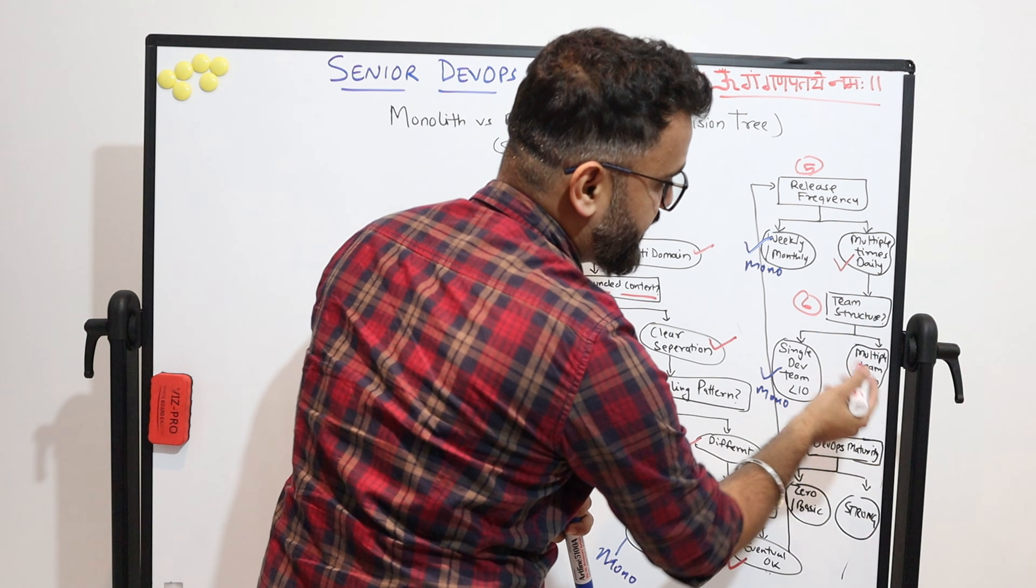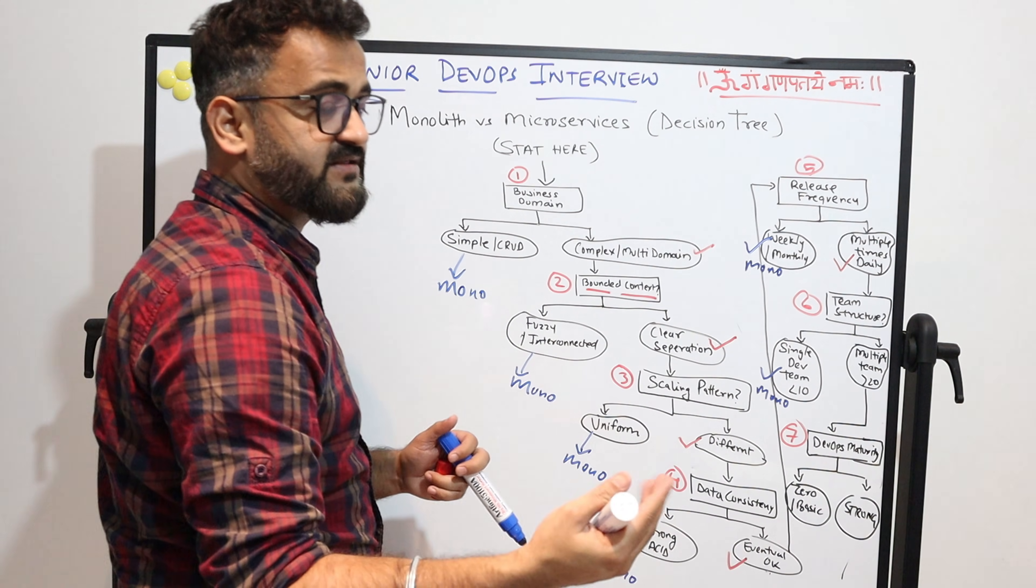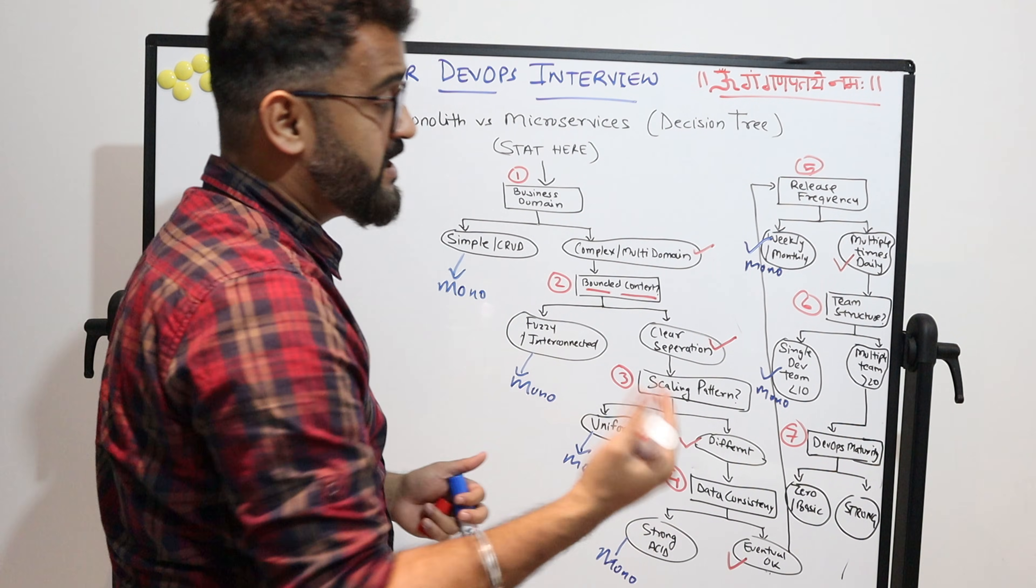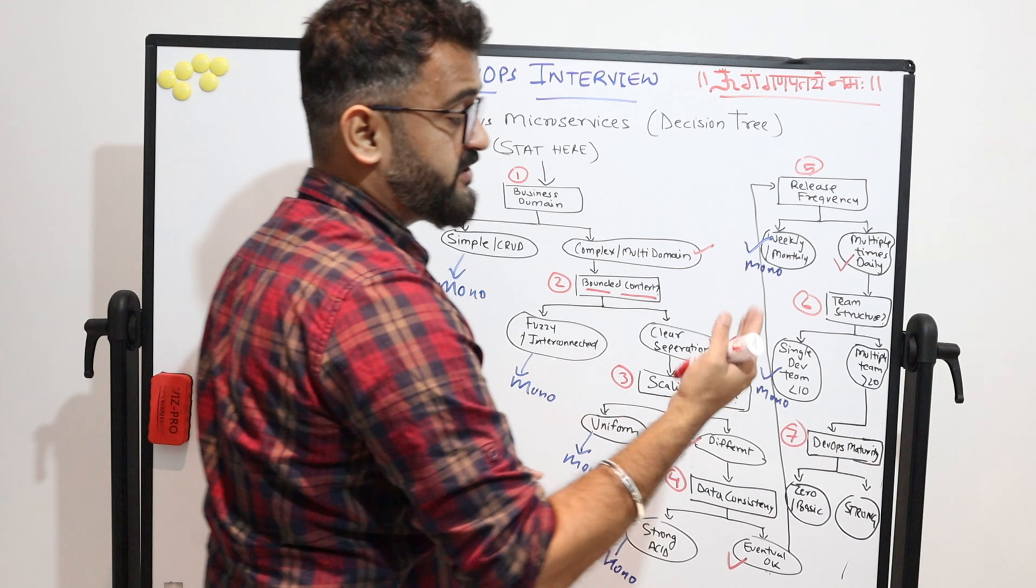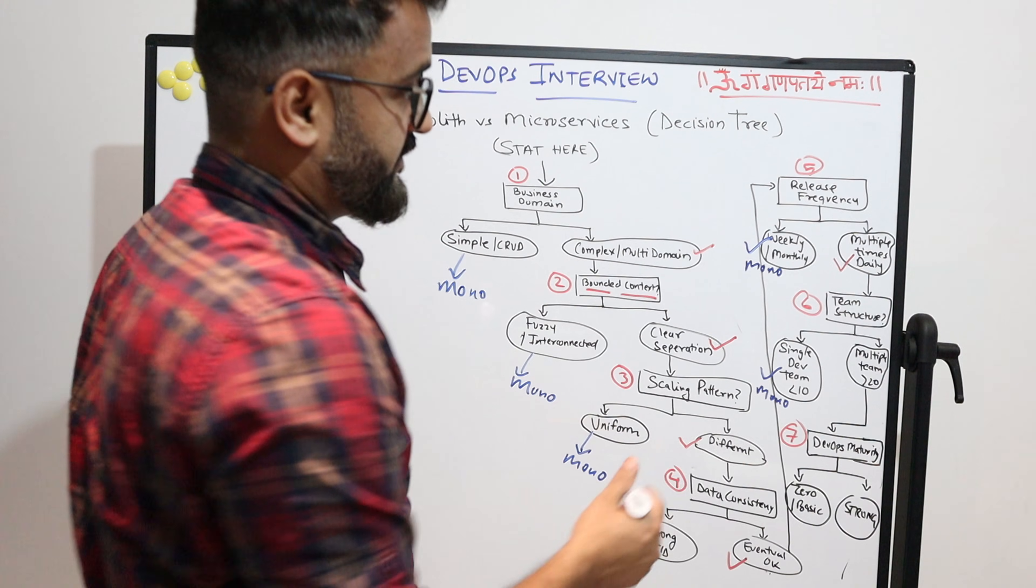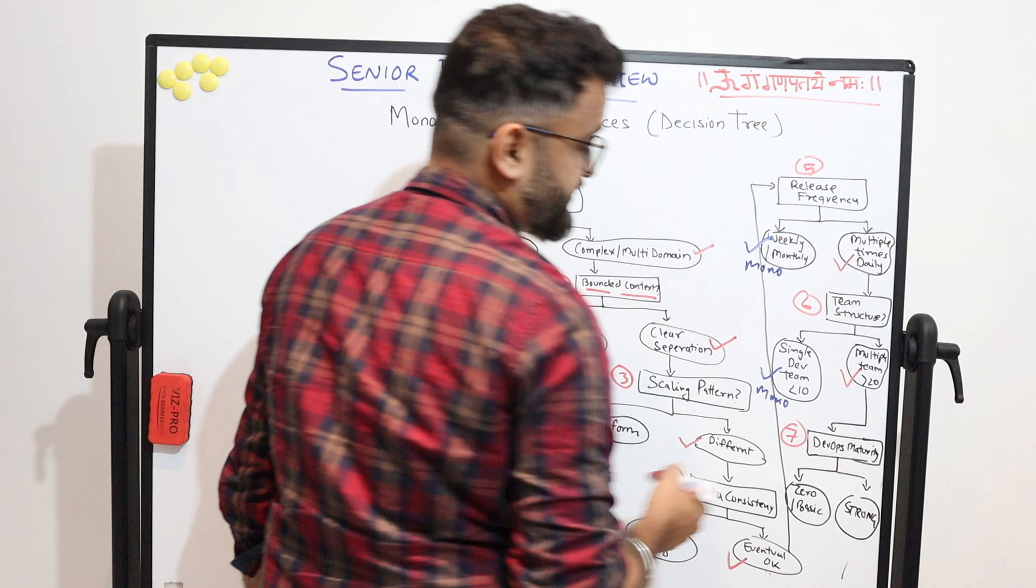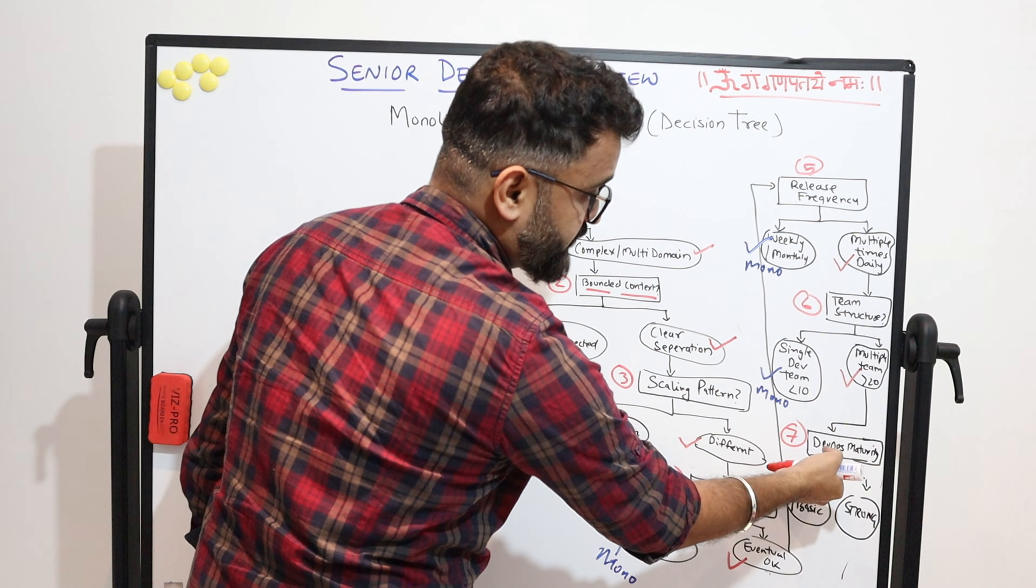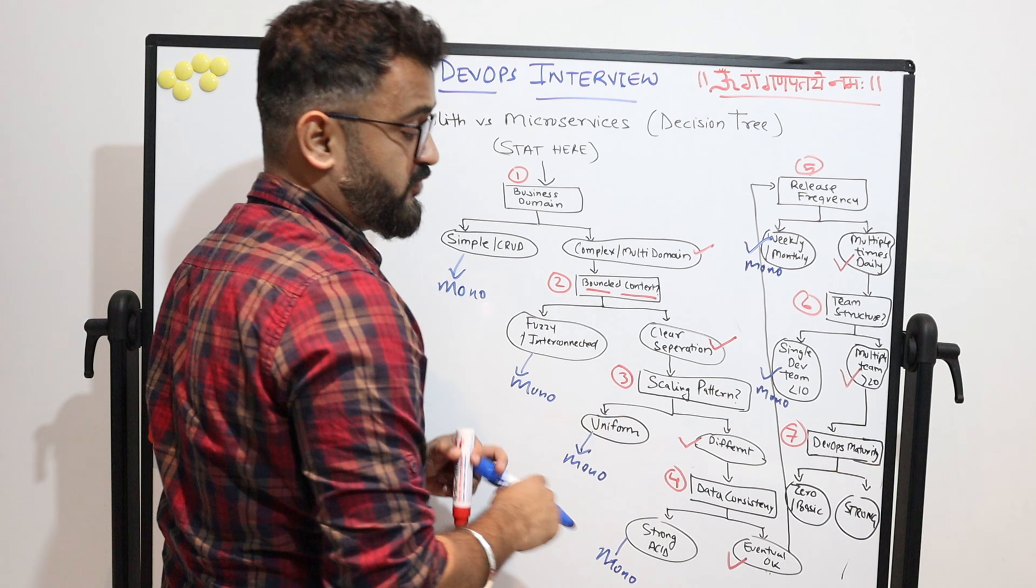Coming to the team structure, if it is a single developer team, less than 10 people, they can't handle the load of microservices. So you have to scale up. It's not that you can simply say no, we have less than 10, we will not go micro. This is just one of those decisions. You can definitely hire and increase your team size—these are just pointers which you have to keep in mind.